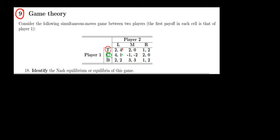Now what would happen if player 1 goes with strategy B? Player 2 is going to choose M because 3 is greater than 2, so 3 is the best option for player 2.